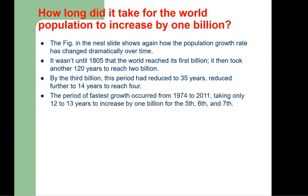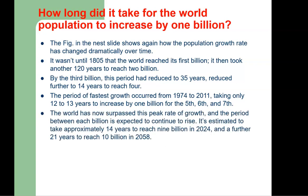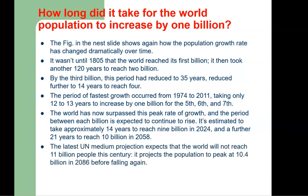The period of fastest growth occurred between 1974 and 2011, and it took only 12 to 13 years to increase by 1 billion for the 5th, 6th, and 7th billion. The world has now surpassed this peak rate of growth, and the period between each billion is expected to continue to rise. It is estimated to take approximately 14 years to reach 9 billion in 2024, and a further 21 years to reach 10 billion in 2058. The last UN medium projection expects that the world will not reach 11 billion this century, projecting the population to peak at 10.4 billion in 2086 before falling again.